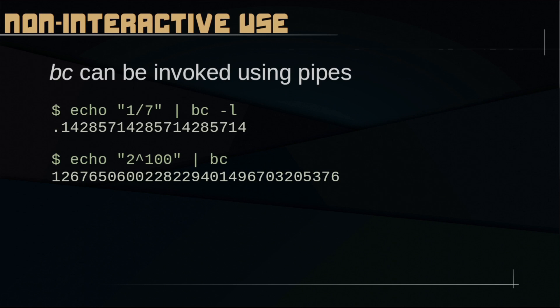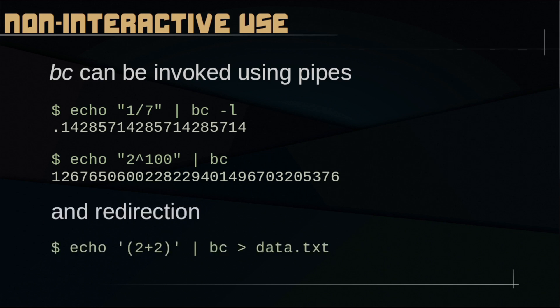BC can be invoked using pipes. For example, you can echo 17 and pipe it to bc -l to get a result with 20 decimal places by default. Or echo '2^100' and send it to BC without any option, and it outputs the huge number that is 2 to the power of 100. BC can also be invoked with redirection — you can redirect your results to a file, making it convenient to save your data.